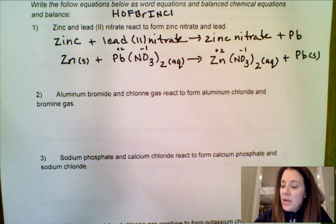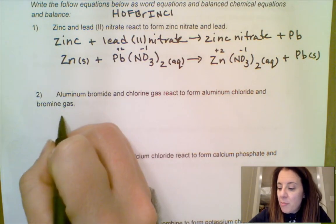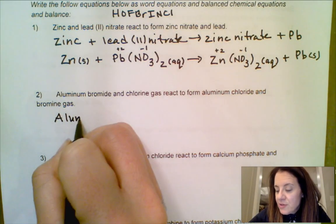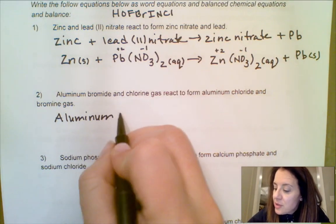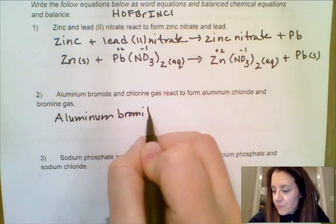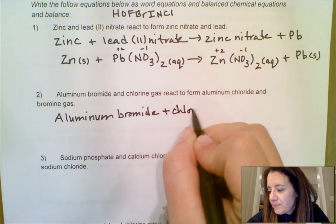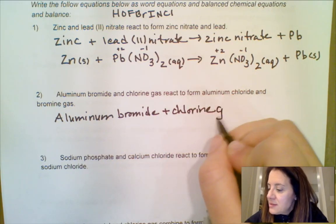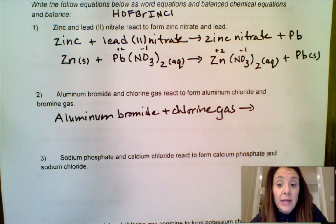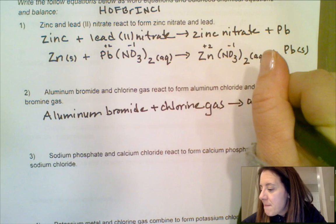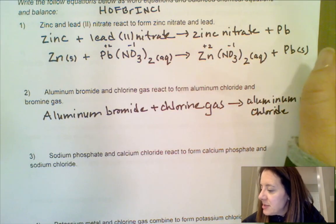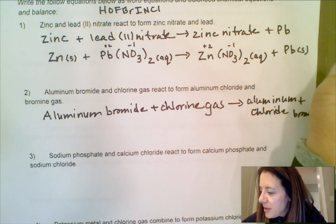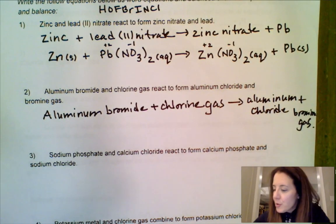Moving on to the next one: aluminum bromide and chlorine gas react. We'll write the word equation first. Aluminum bromide is a binary compound. Aluminum bromide plus chlorine gas yields aluminum chloride and bromine gas. It would have been nicer to have left a bit more room to make it all linear, but that's okay.